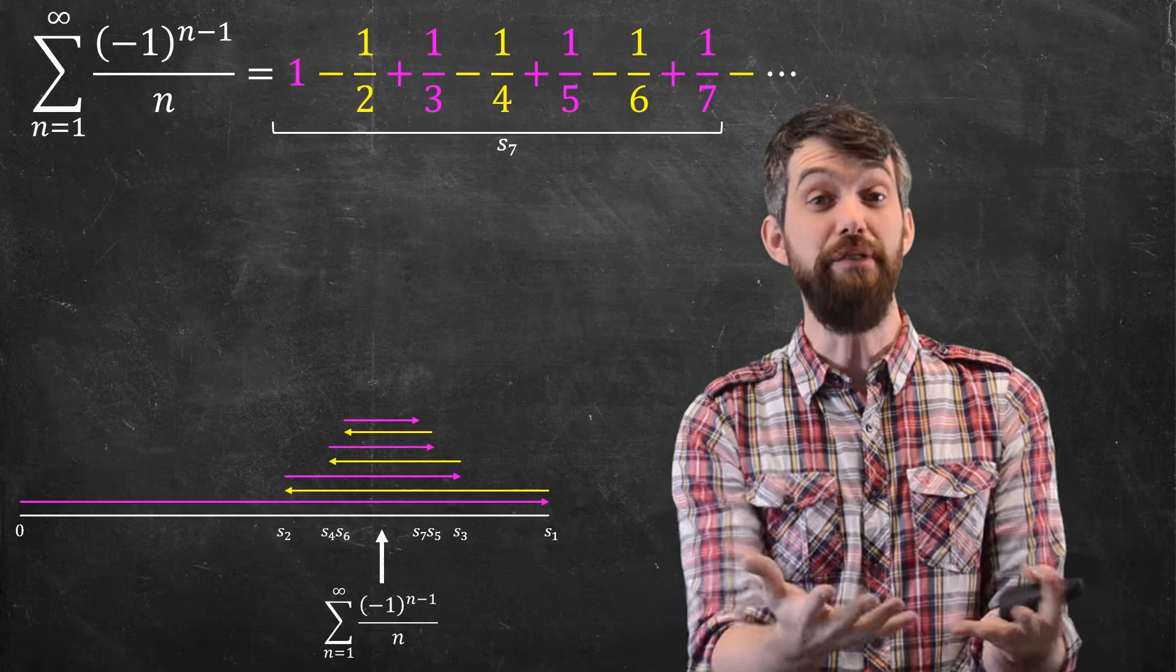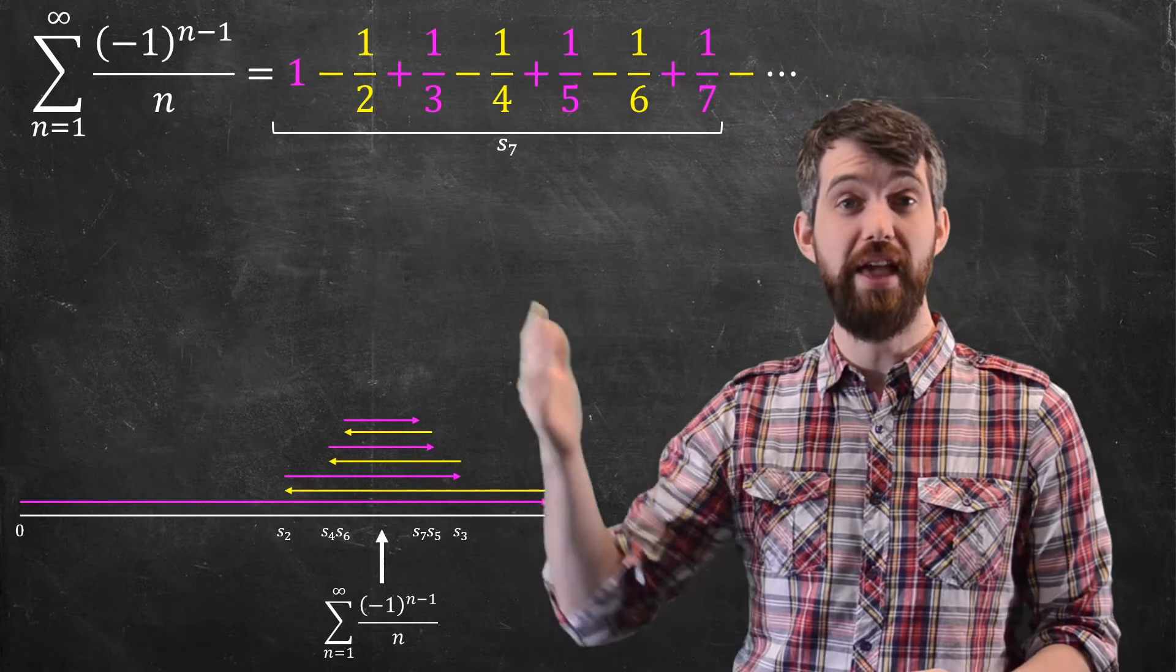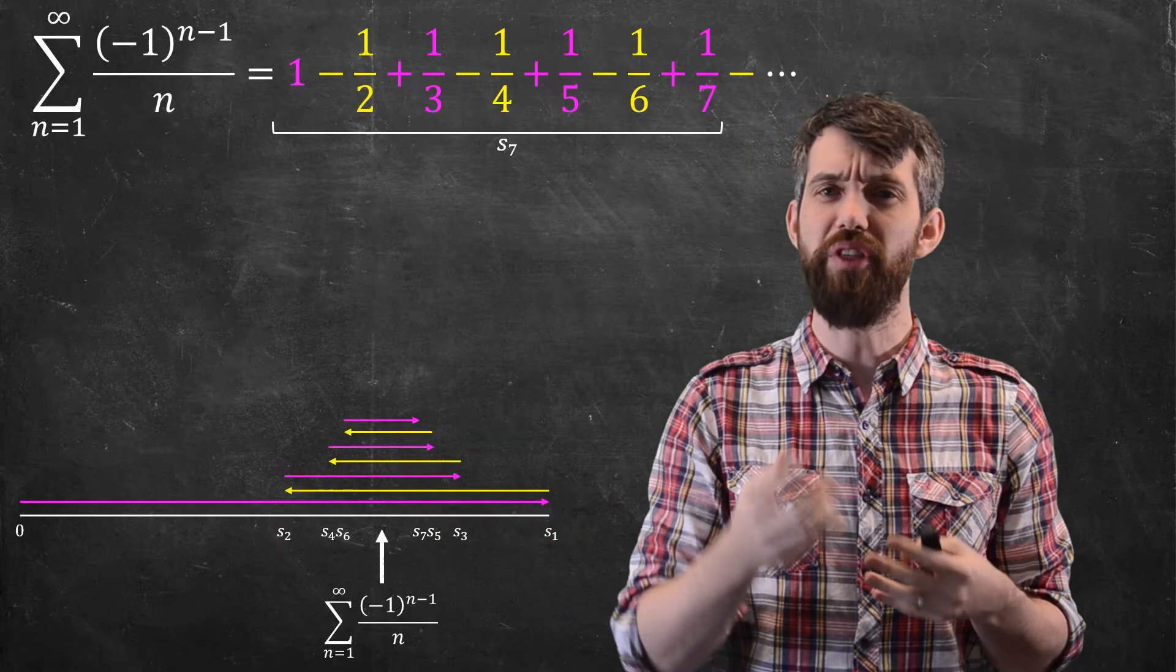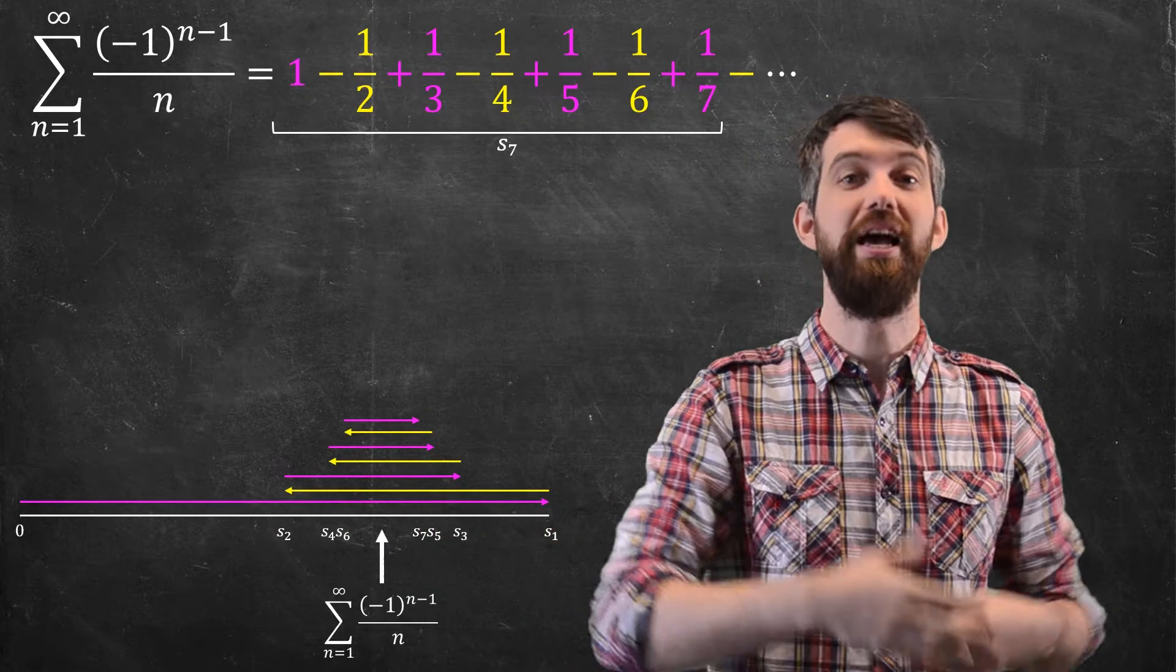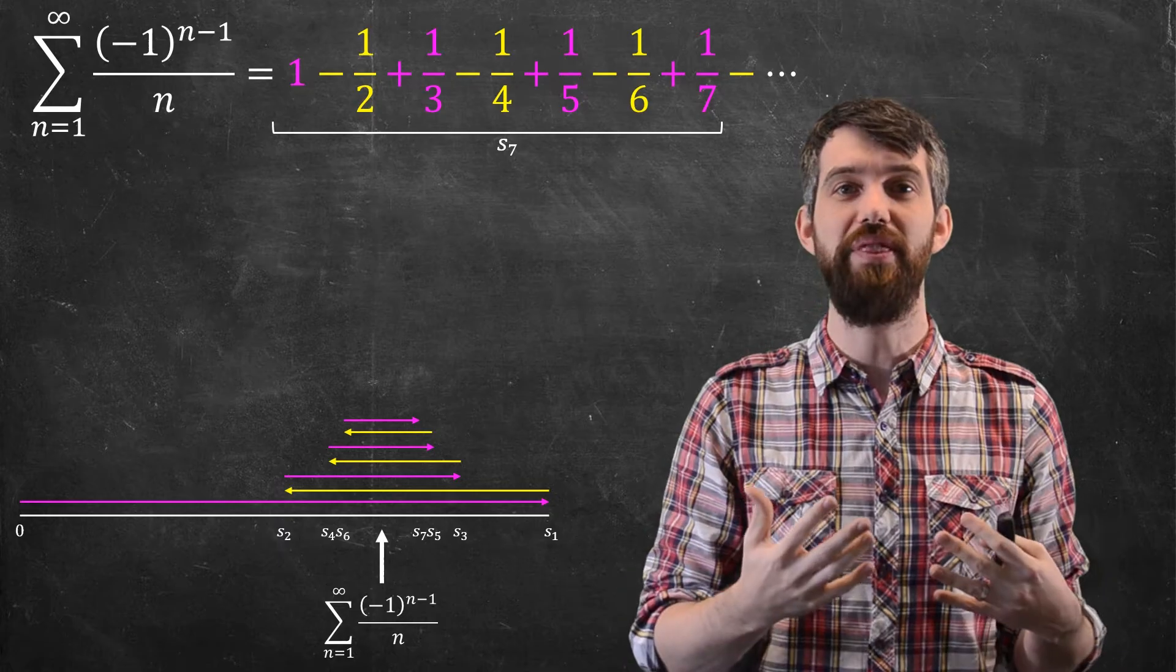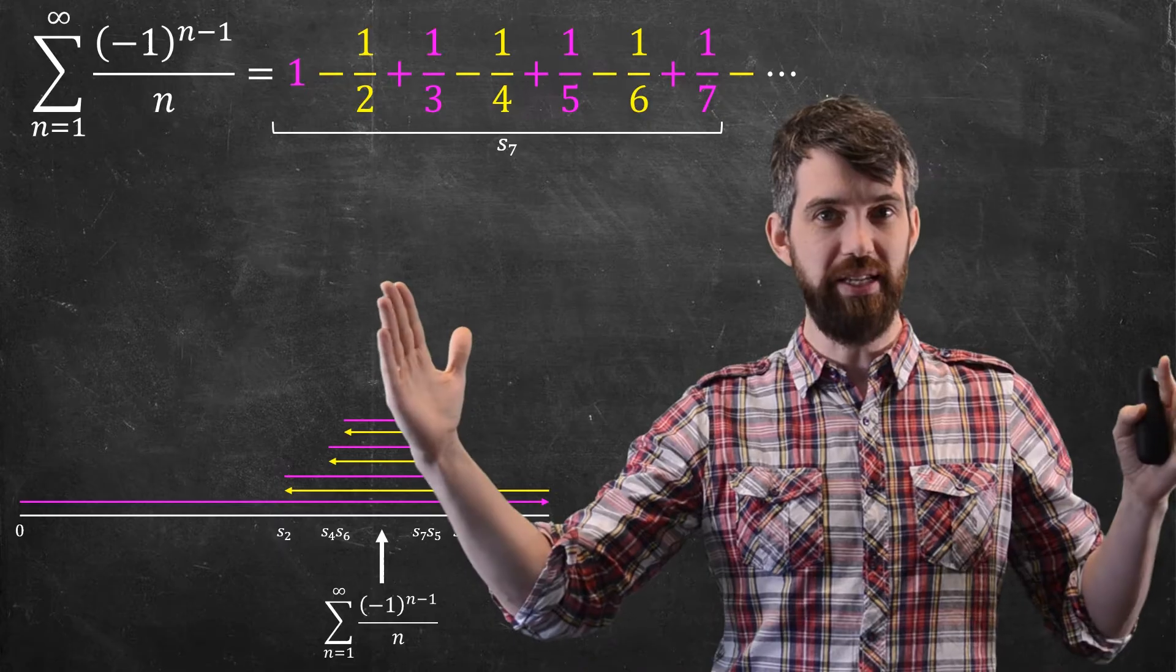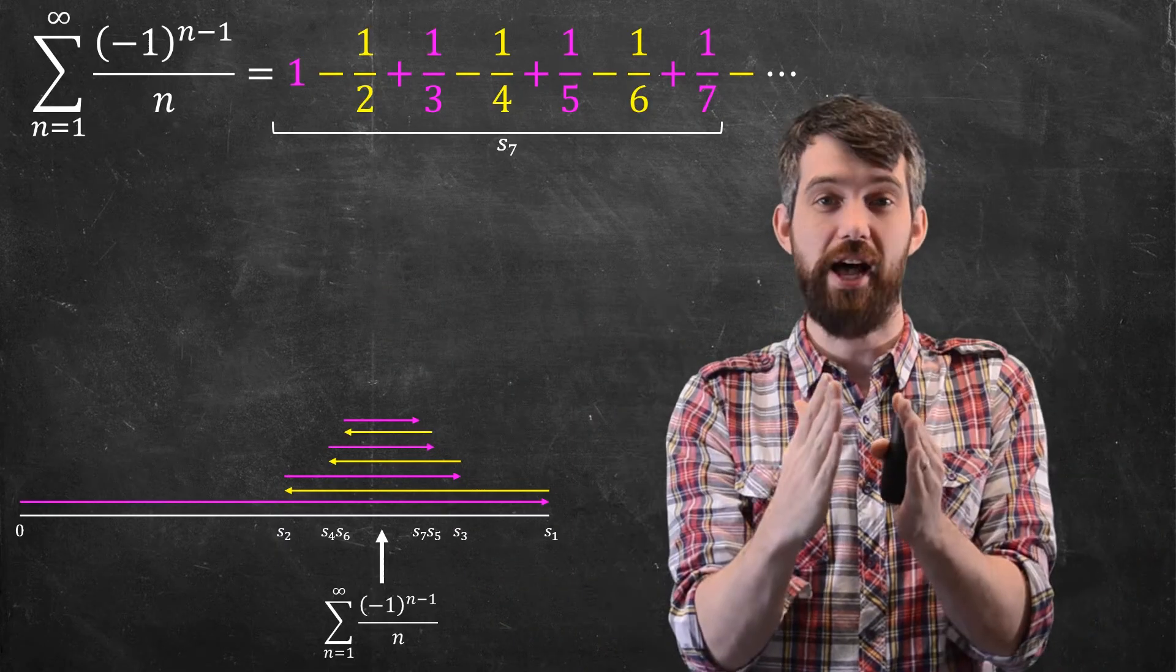If we look at all the even partial sums s₂, s₄, s₆, the even sums form an increasing sequence. The odd partial sums s₃, s₅, s₇ form a decreasing sequence. So the final answer appears to be squished between these two sides.